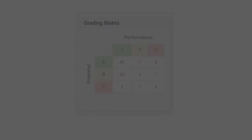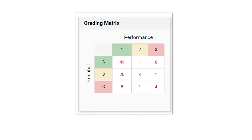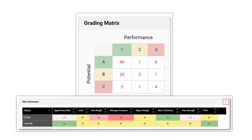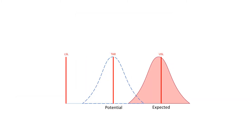The two components together create nine possible grades from A1 through C3, which help paint a very clear and concise picture of your overall process performance and potential for improvement. This A3 grade depicts a process that is highly capable but performing poorly.